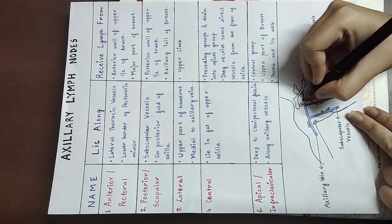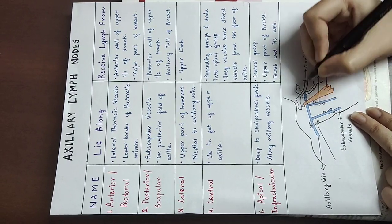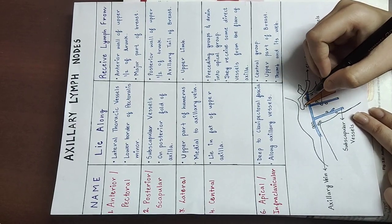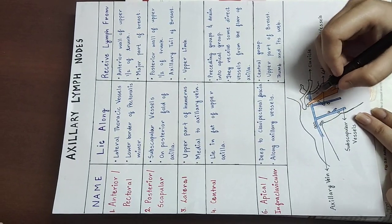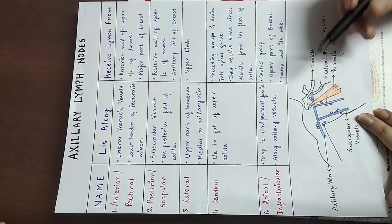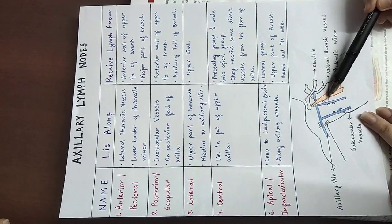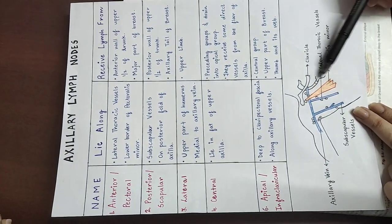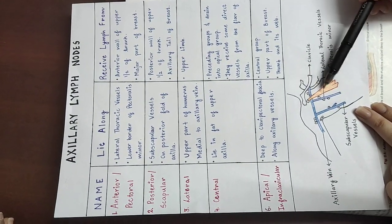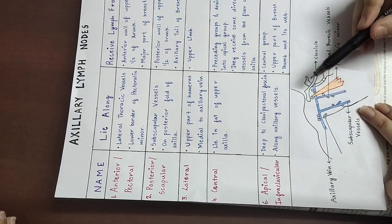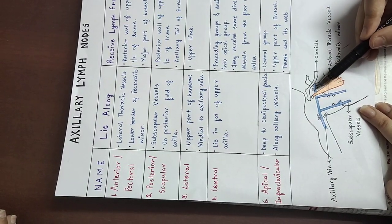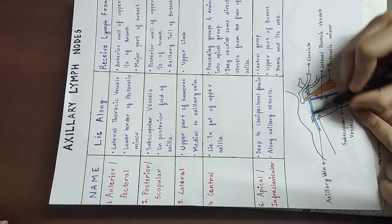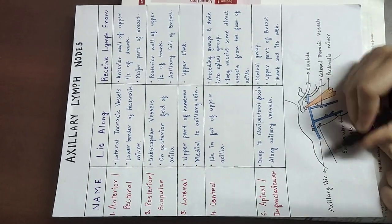The apical group is also called the infraclavicular group because they are under the clavicles. They lie deep to the clavipectoral fascia — the thin membrane-like structure between the clavicle and the pectoralis muscle. The apical lymph nodes lie along the axillary vessels.